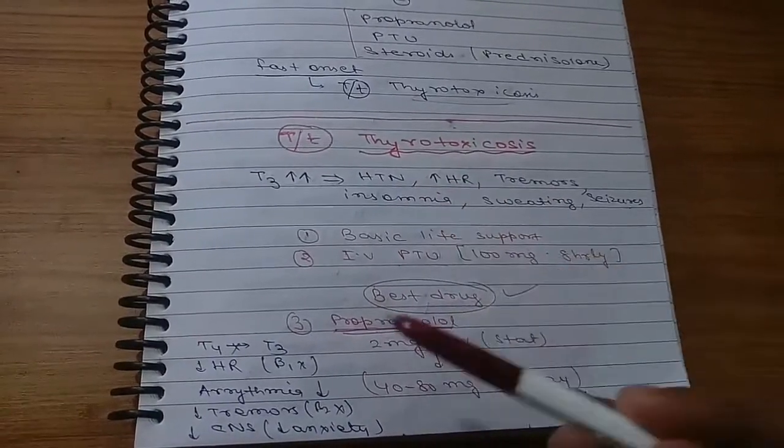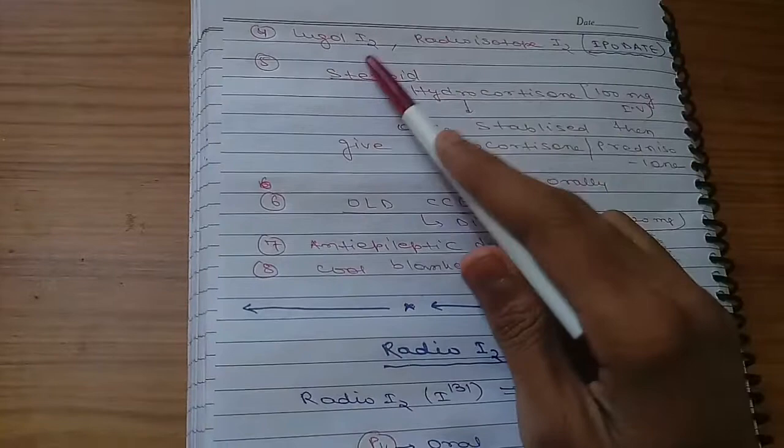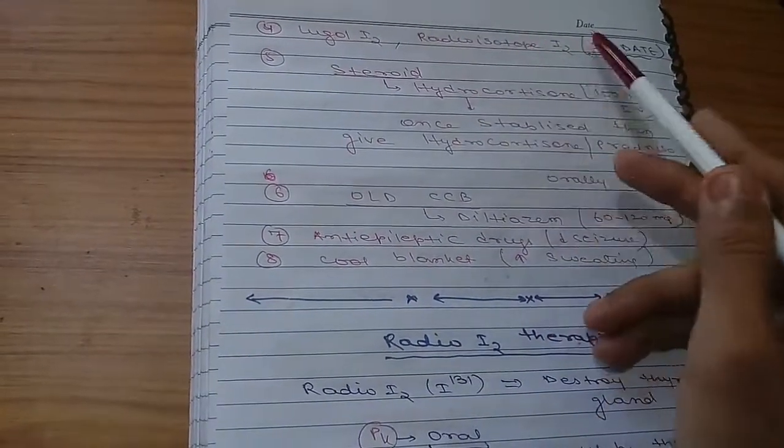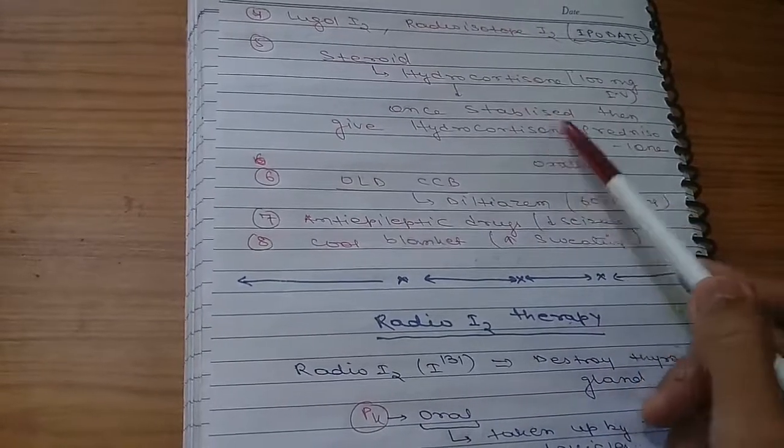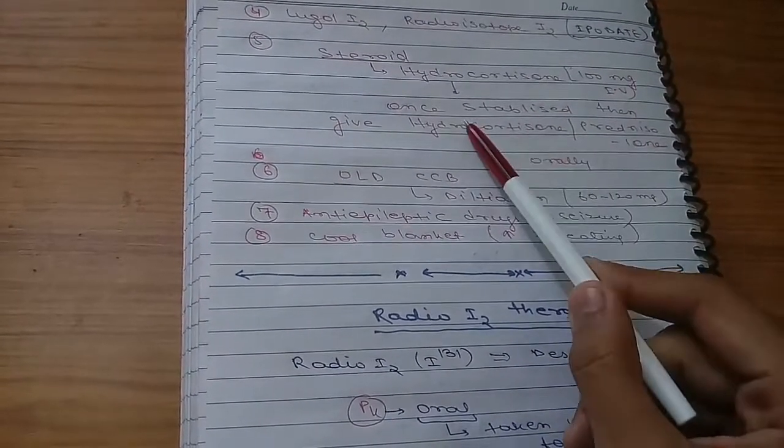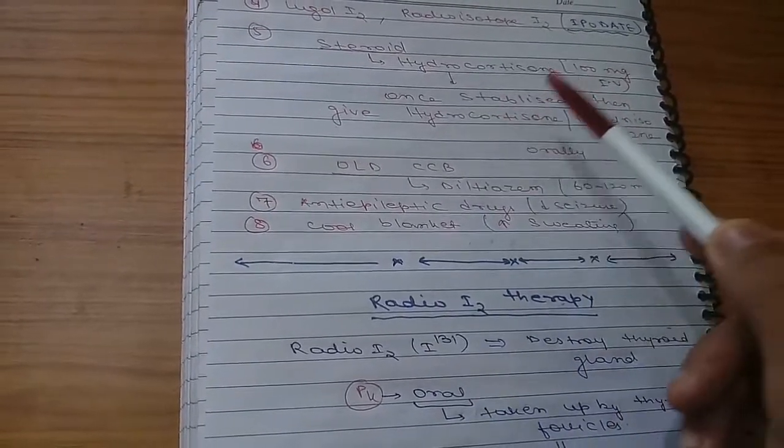You can also give Lugol's iodine. You should also give a steroid, hydrocortisone. Once patient is stabilized, then give hydrocortisone orally. First you give IV route, then after stabilization you should give through oral route.